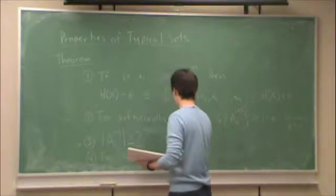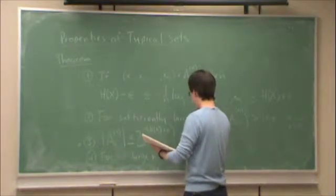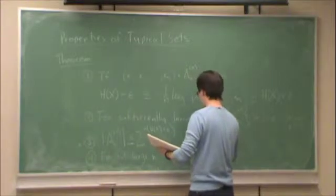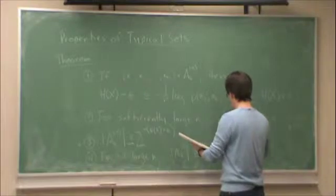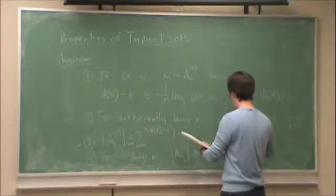The cardinality of the Typical Set is greater than or equal to one minus epsilon times two to the n h(X) minus epsilon.